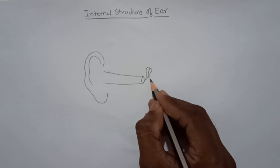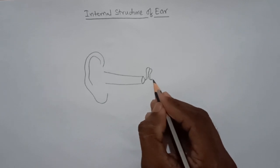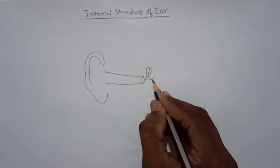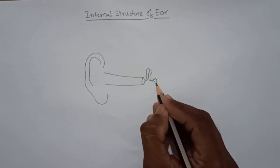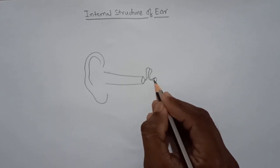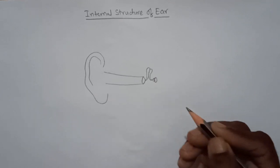And from here, the smallest bone of the human body—it is stapes. We have to draw it like a horseshoe, like this.